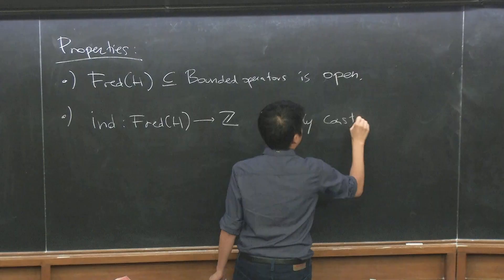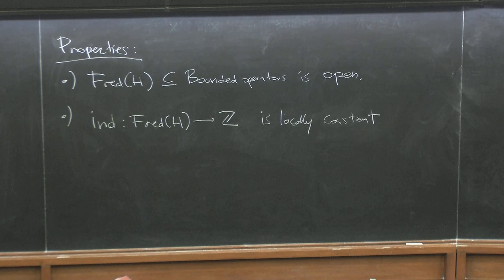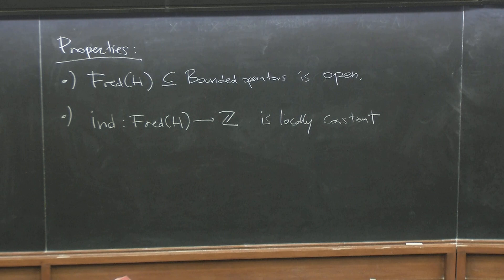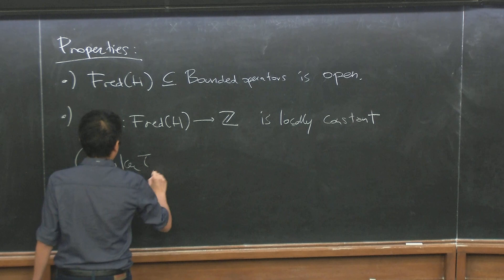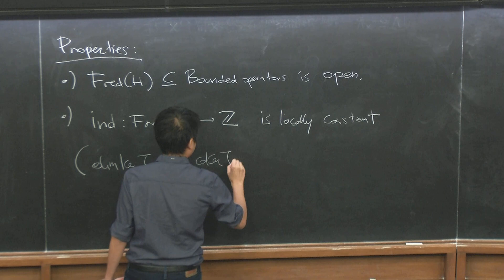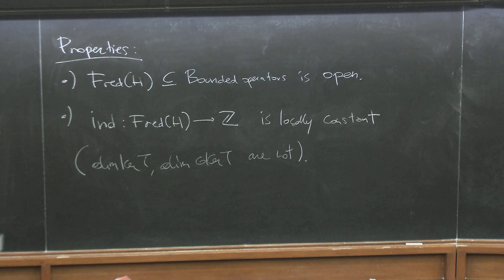The second property: the index from the space of Fredholm operators to the integers is locally constant. If you perturb a Fredholm operator by a little bit, it will still be Fredholm and will have the same index. The index is a very robust object — that's why it's related to topology. The dimension of the kernel and co-kernel individually are not locally constant; they jump. But their difference stays the same.